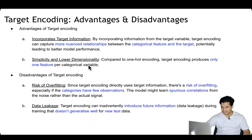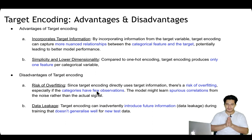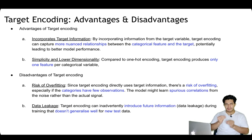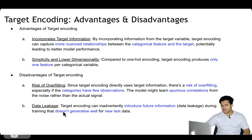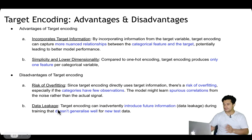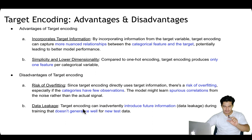There are also disadvantages to target encoding. For categorical variables with many categories where some categories have very little data, the target encoding may be spurious, which can lead to underfitting or overfitting. There is also a risk of data leakage — if your test data is not properly separated in a time-based manner, some future information may be encoded because the target variable is directly used for encoding, so the model may not generalize well to new test data.